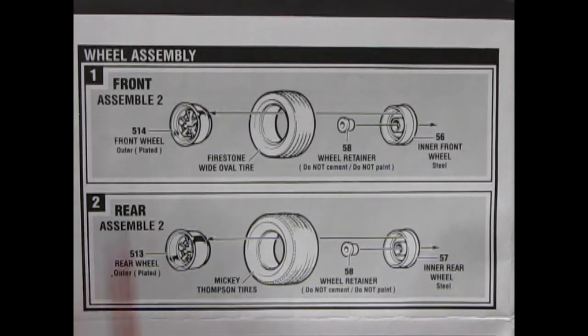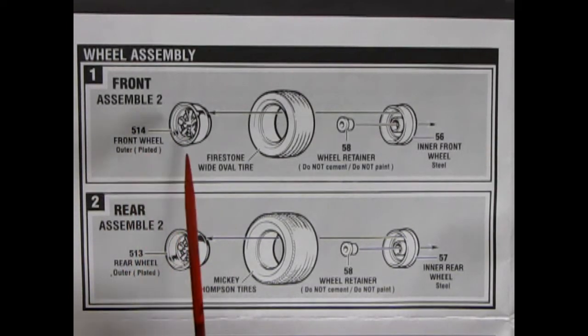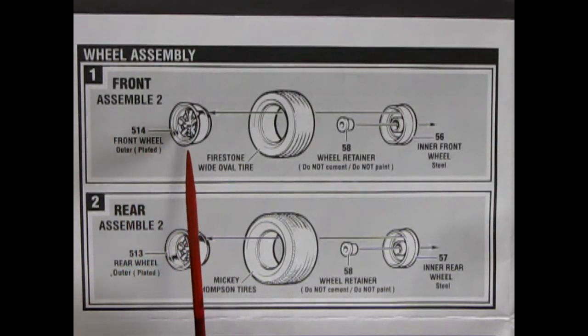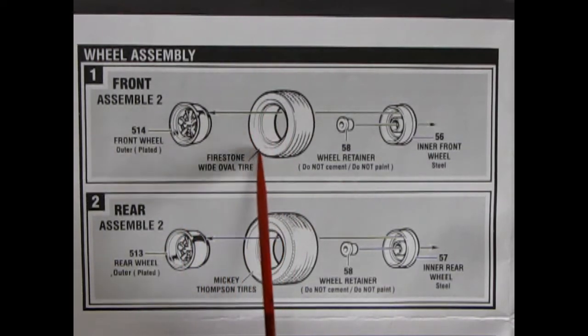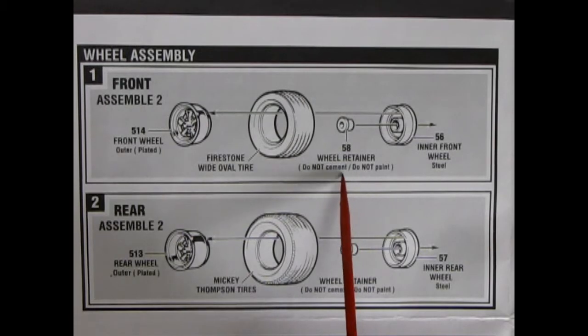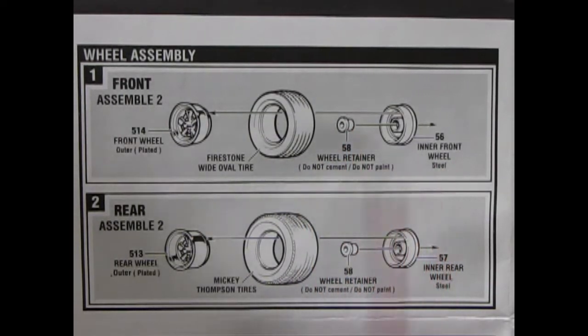And now we begin our wheel assembly. Here we have the front wheel, which is plated. Which I do believe is a Cragar mag. Then we get the Firestone wide oval tires with the indentation. The wheel retainer. And then the inner front wheel, which is steel.